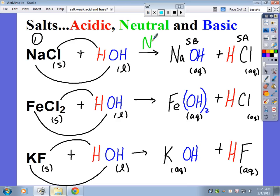What about iron chloride? Iron chloride forms a weak base and a strong acid. And so therefore, this is an acidic salt because a strong acid wins.